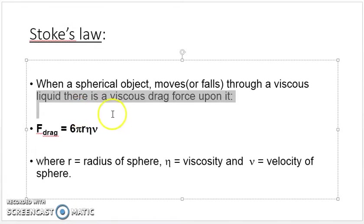This force is given by F_drag = 6πrηv, where r is the radius of the sphere, η is the viscosity (truly named coefficient of viscosity), and v is the velocity of the sphere.